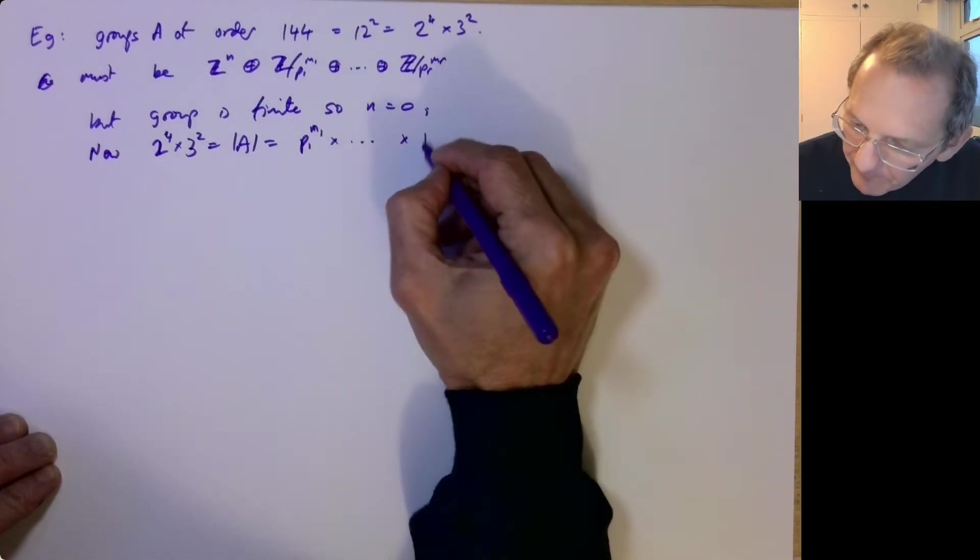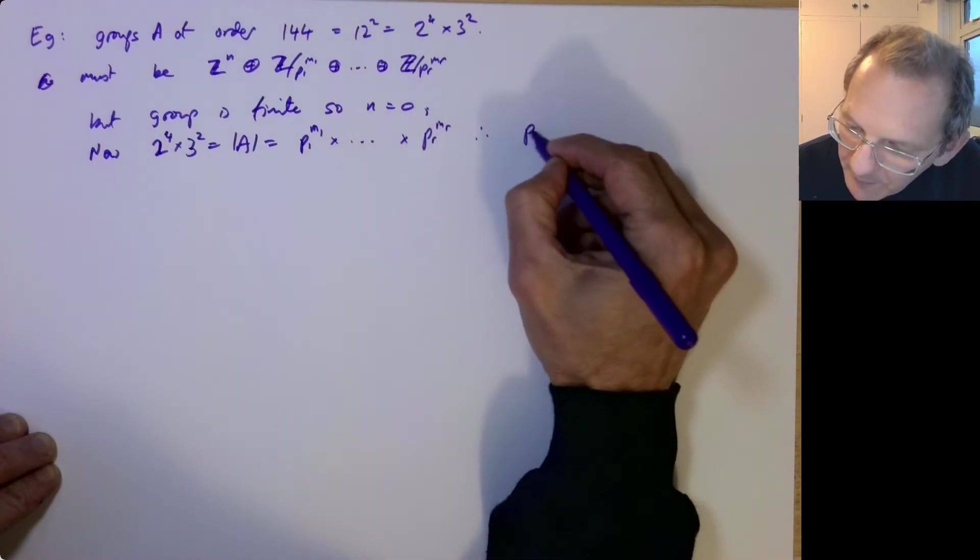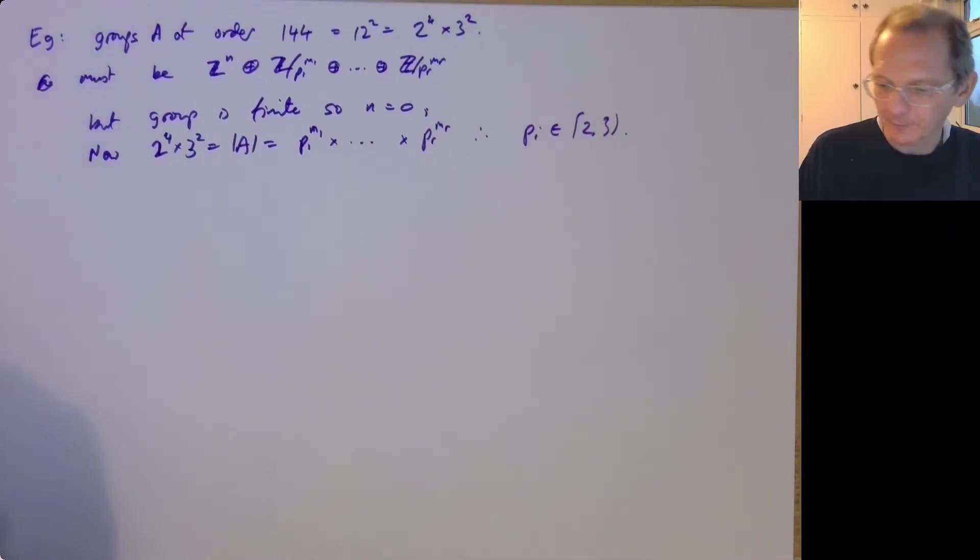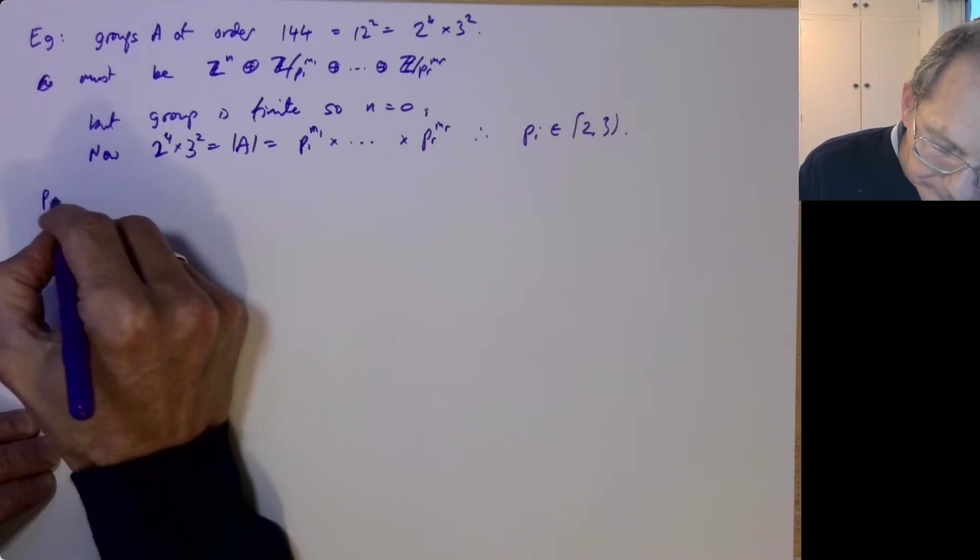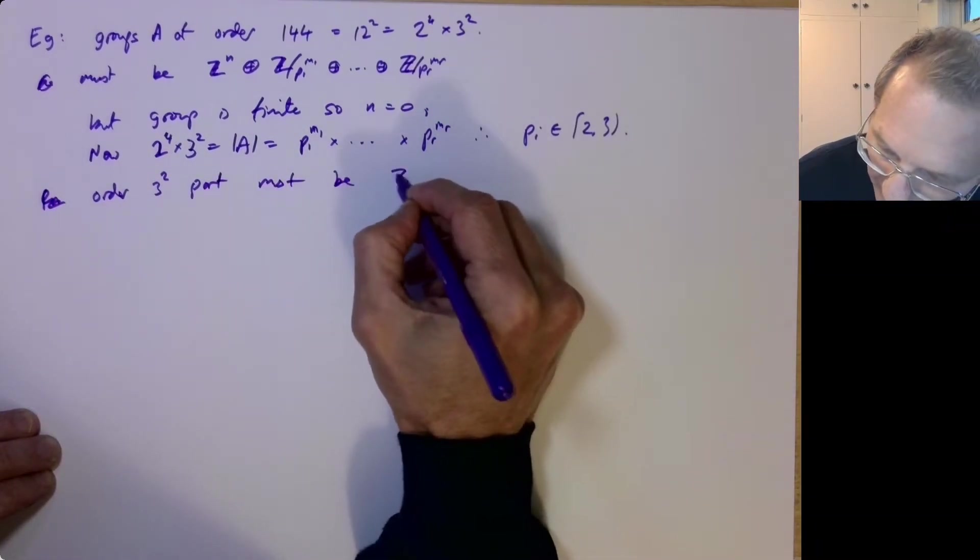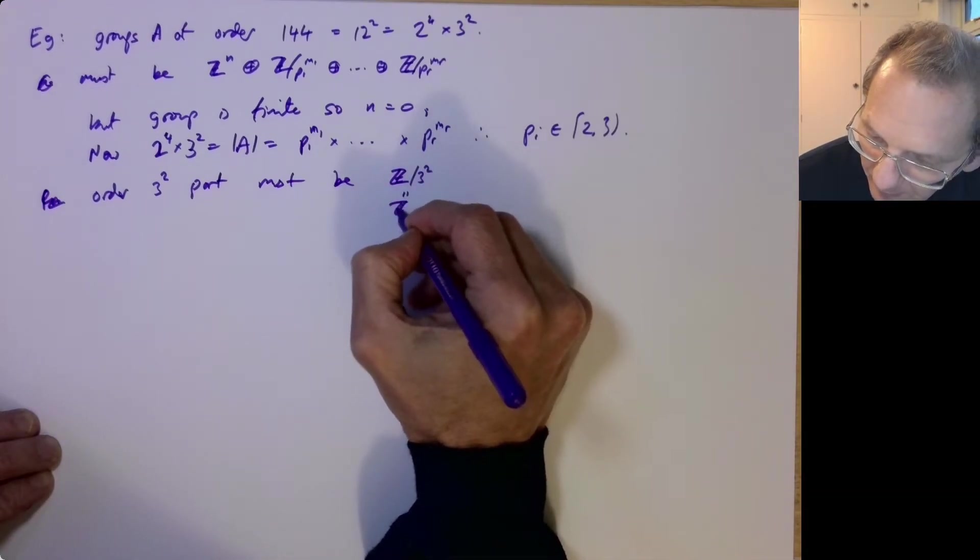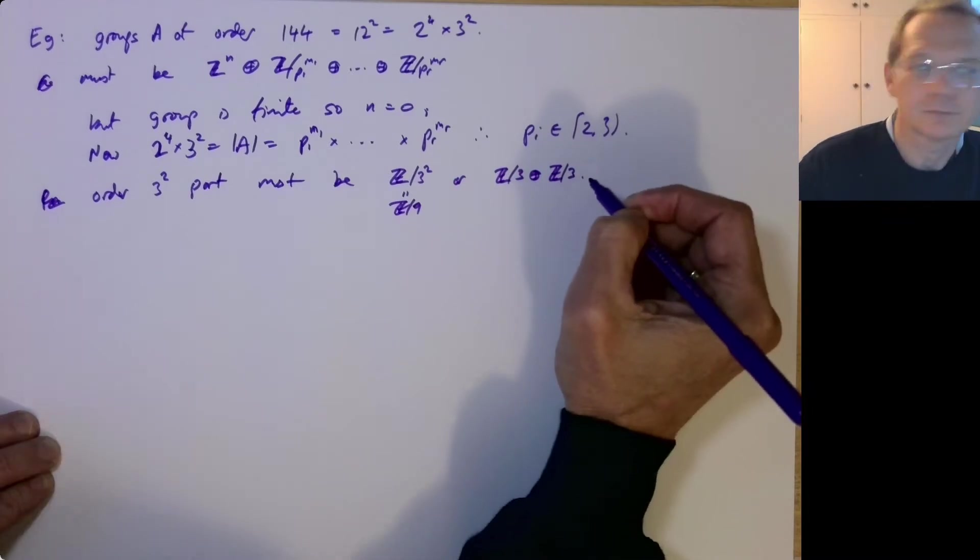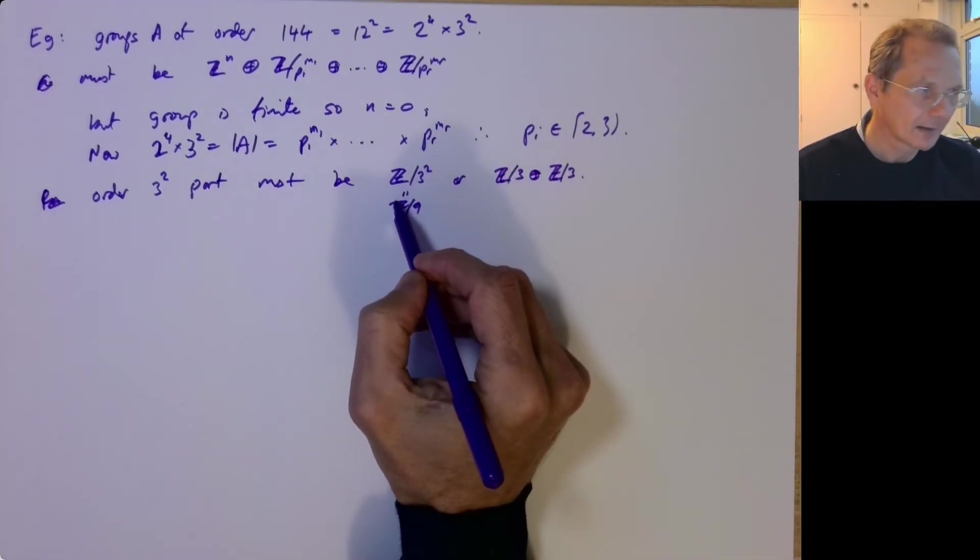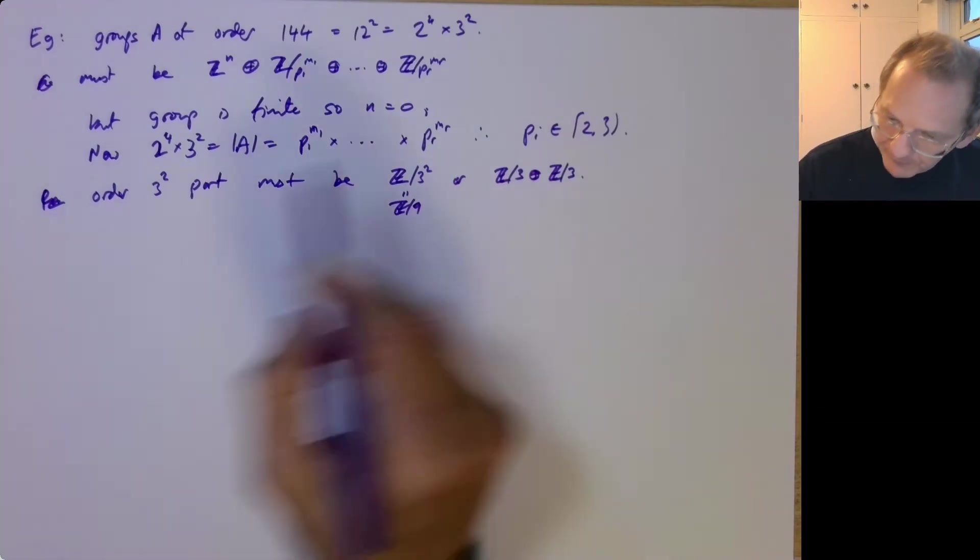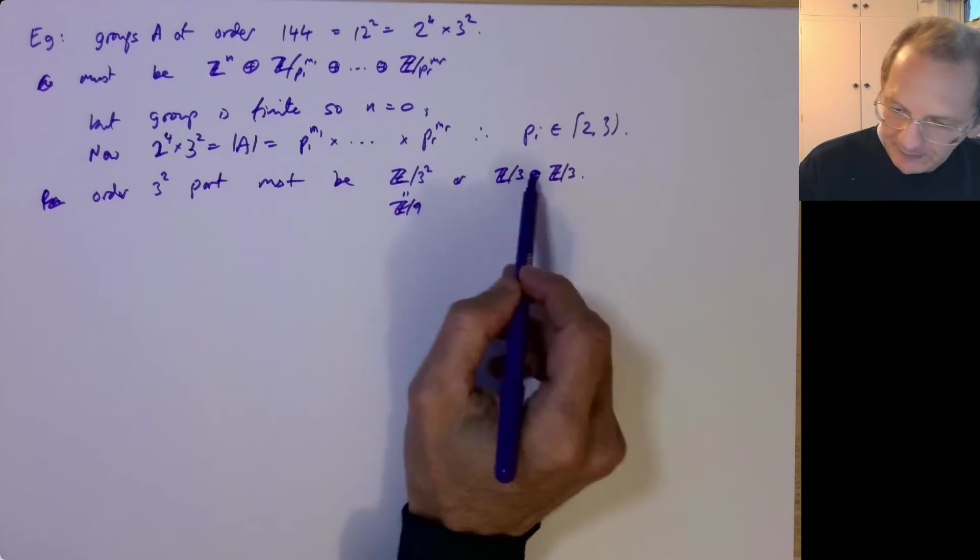So groups of order 2 to the 4th times 3 squared, that's the order of your group A, and that's got to be P1 to the M1 times, it's got to be the product of the orders of these factors. So each PI has got to be 2 or 3. So the possibilities are, the order 3 squared part must be, it could be Z mod 3 squared, Z mod 9, or Z mod 3 plus Z mod 3. And remember, as we explained previously, these are definitely different. This group here has a bunch of elements of order 9, whereas every element here, apart from the identity, has order 3. So these are definitely different groups.